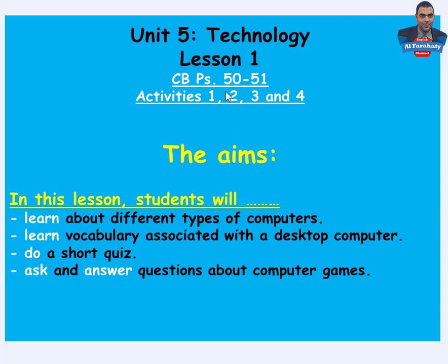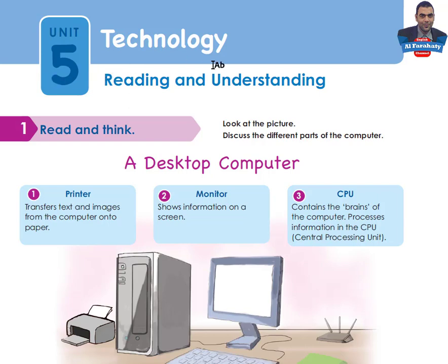Let's go to page 50 of your class book, Unit 5 Technology, Reading and Understanding section. This unit covers different kinds of technology, including computer technology, space technology, mobile phones and smartphones, technology related to houses of the future, and other aspects of the future such as flying cars, robots, and food printers.